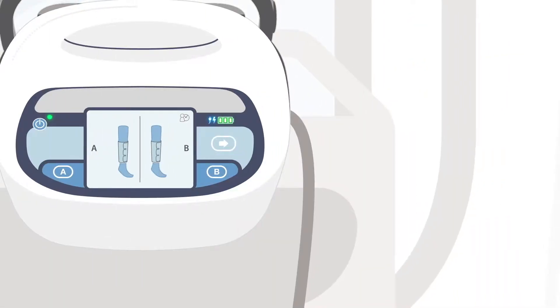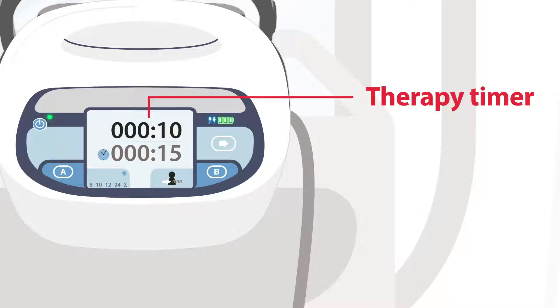To navigate to the compliance meter, press the right arrow button. The top number shown is the wear time by the patient or the therapy time, while the bottom number shown is the run time of the pump since startup or the elapsed time.